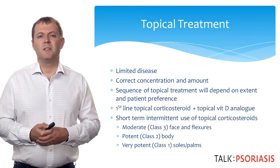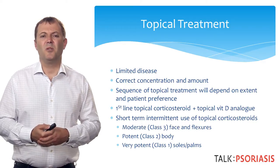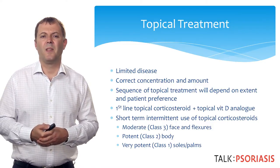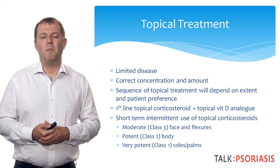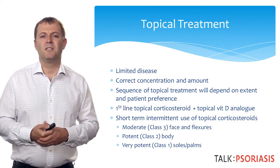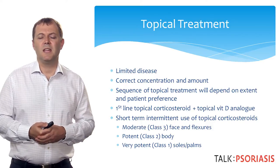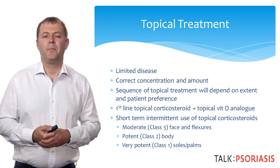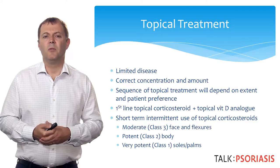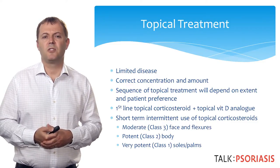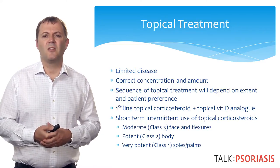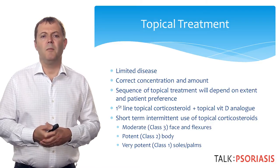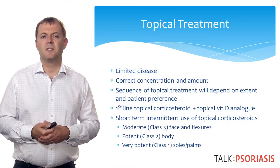Topical treatment is mainly used to treat limited plaque disease, around 10 to 20 percent of body surface area. It's important to prescribe the correct concentration and give the patient the correct amount of cream. In most situations the first line treatment for plaque psoriasis is topical corticosteroids with or without a topical vitamin D analogue, applied once or twice daily, with short intermittent courses of three to four weeks. The appropriate strength depends on the site — moderate potency for face and flexures, very potent for thicker areas such as the soles and palms.